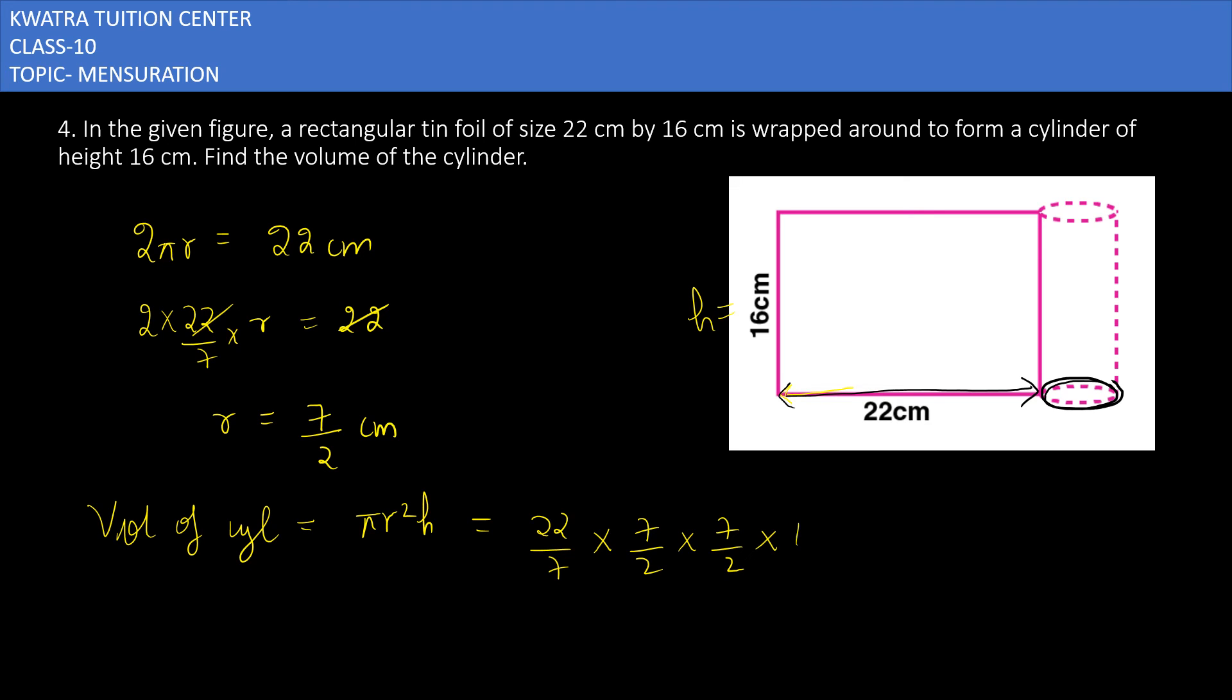Now you can cancel 7 with 7, 2 with 22 it will give you 11, then 2 with 16 it will give you 8. So 11 into 7 into 8 will give you 616 centimeter cube.